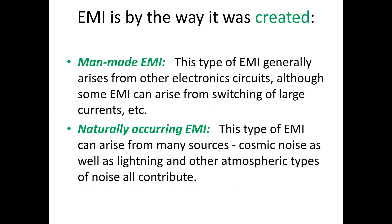Now let us go further in depth. What are the EMI types? One classification is based upon how it was created. There are two types: man-made EMI and naturally occurring EMI. Man-made EMI arises from other electronic circuits, although some EMI can arise from switching of large currents. Naturally occurring EMI can arise from many sources in nature, such as cosmic rays, lightning, and other atmospheric noise.